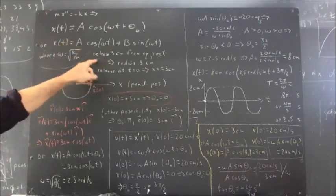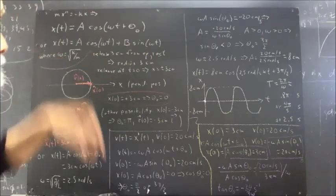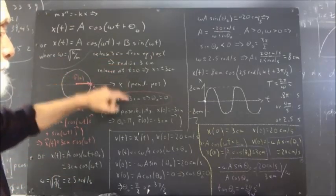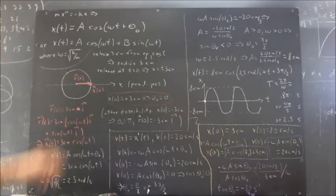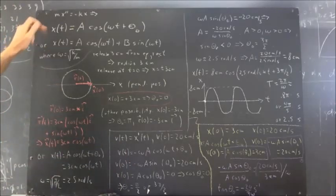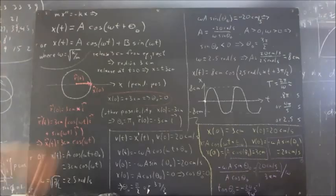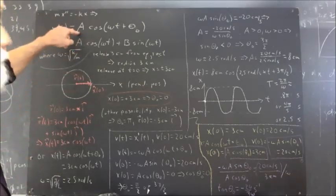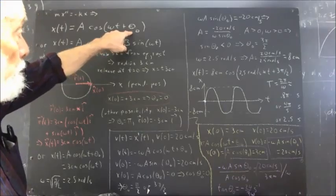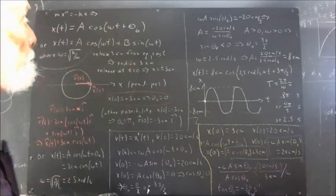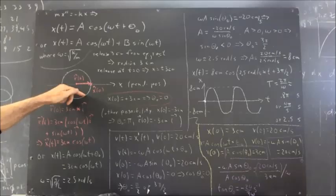Now we have a situation where we want to release the pendulum at a position three centimeters from equilibrium and let it oscillate back and forth. Three centimeters from equilibrium could be at plus three or minus three centimeters — we're going to choose the plus. This solution is modeled by motion around a reference circle of radius A, with the t = 0 position on the reference circle being θ₀, and x is simply the projection of the point on the reference circle onto the x-axis.